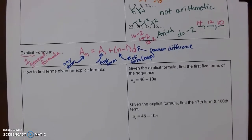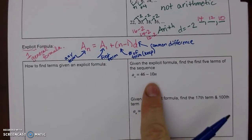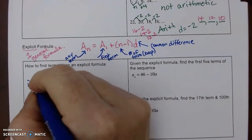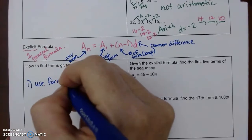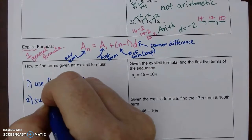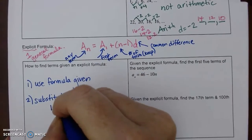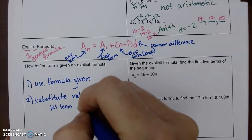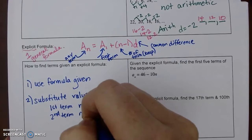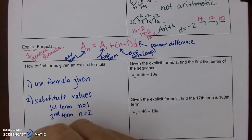To find terms given an explicit formula: step 1 — use the formula given; step 2 — substitute the values you want (n = 1 for the first term, n = 2 for the second term, and so on); step 3 — simplify.